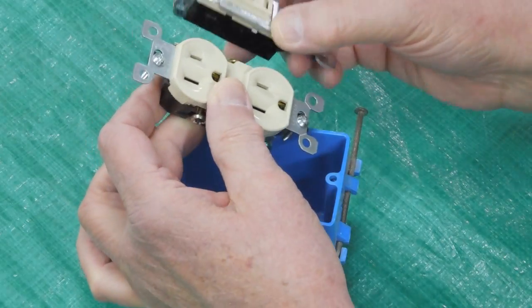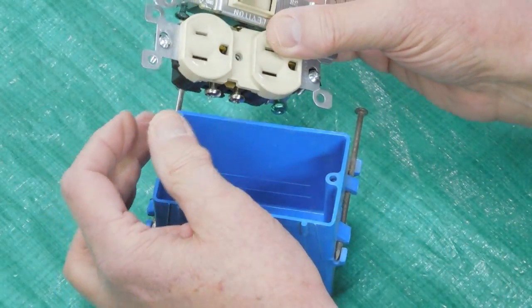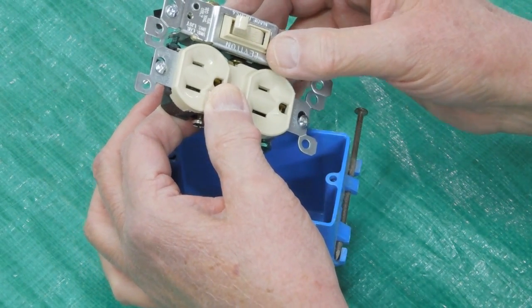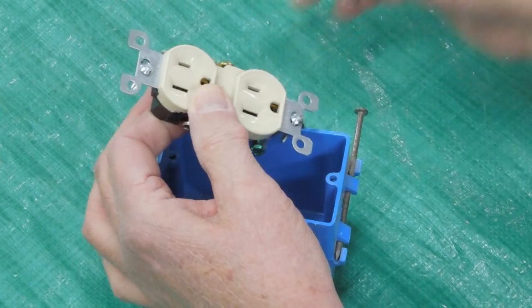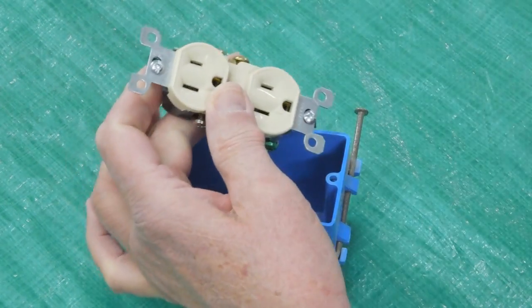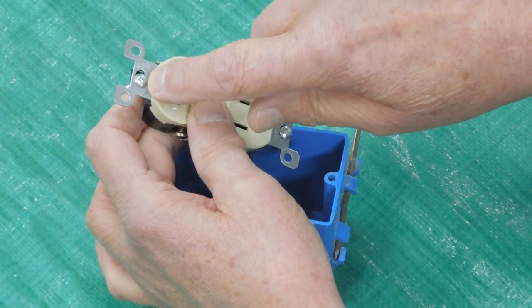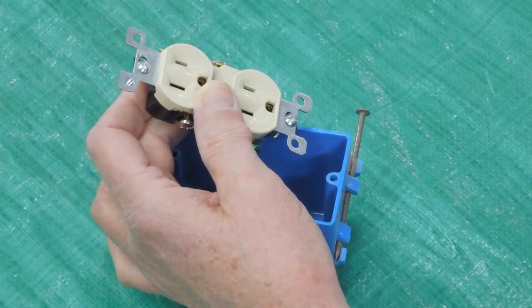These outlets and these switches only cost 50 cents or a dollar each when you buy them in bulk at some of the hardware stores. There's no telling what an electrician will charge you to replace one of these. Almost all of these have a screw head that will take a flat blade screwdriver, a Phillips, or a square drive.